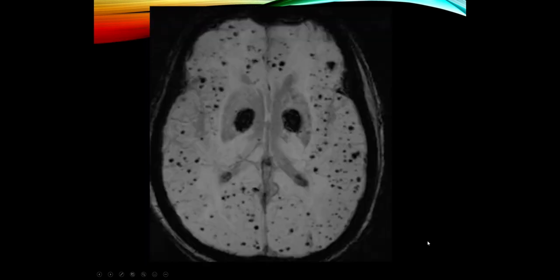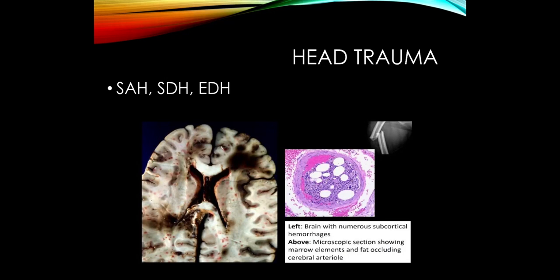A specific MRI technique can help us pick up cerebral amyloid angiopathy. An individual who has had multiple small bleeds over time on MRI would be really diagnostic for this condition. Regarding fat emboli: after severe trauma with bone fractures, fat emboli travel to the brain and tend to give multiple subcortical hemorrhages. We can actually see fat elements in the blood vessels, so multiple subcortical hemorrhages after head trauma are probably from fat emboli from bone fractures.